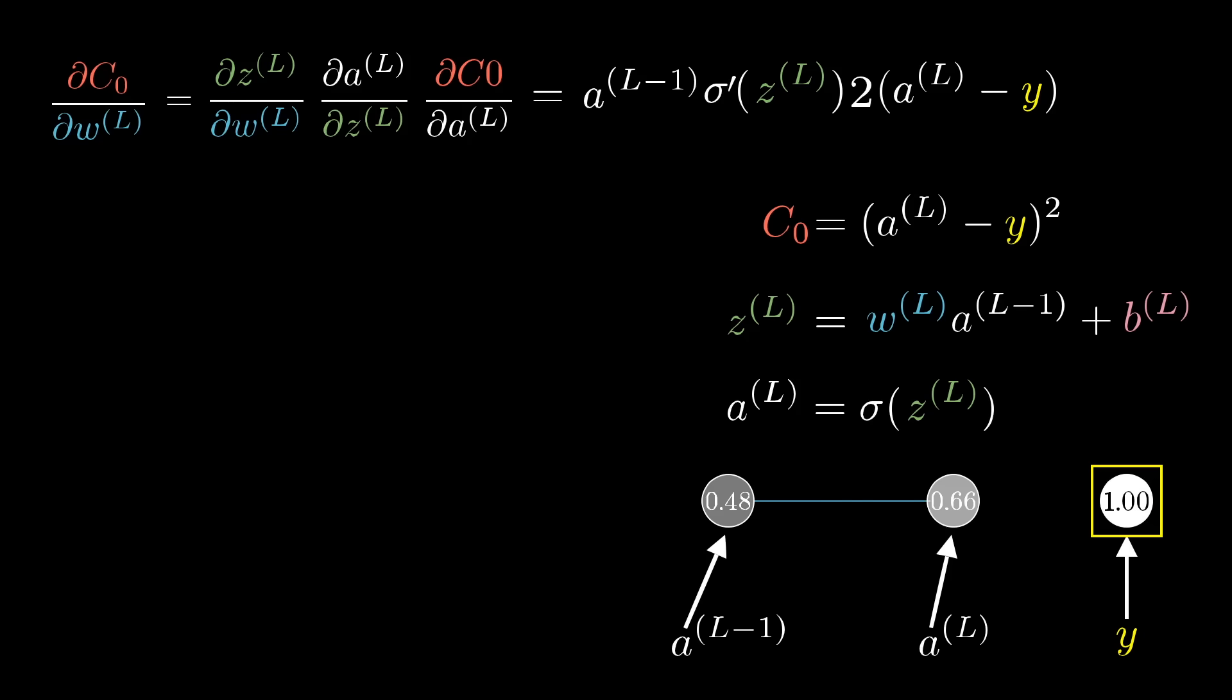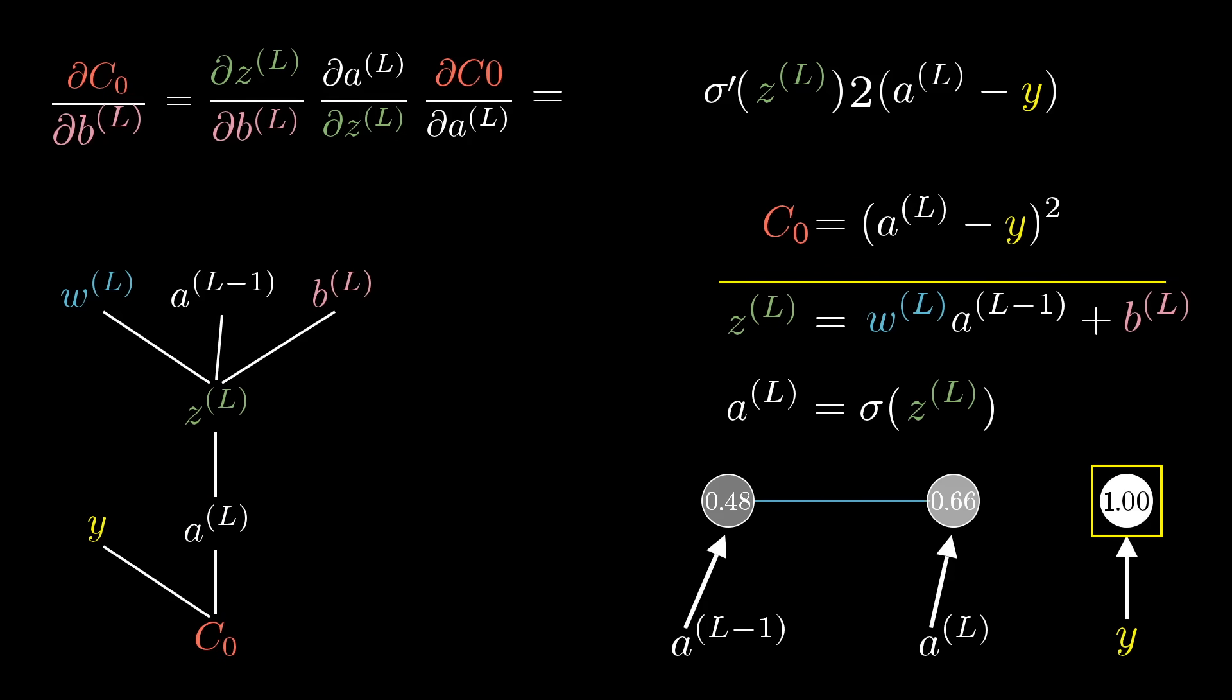But even though that's just one of the many partial derivatives we need, it's more than 50% of the work. The sensitivity to the bias, for example, is almost identical. We just need to change out this del z del w term for a del z del b. And if you look at the relevant formula, that derivative comes out to be 1.